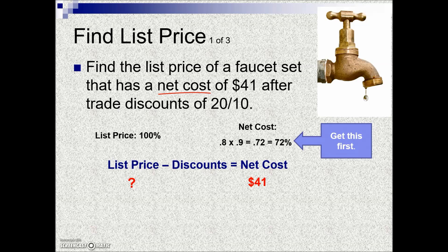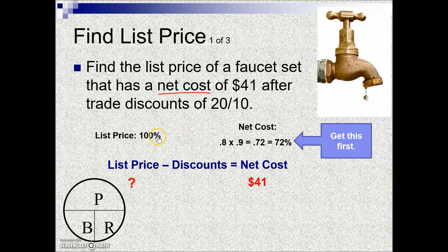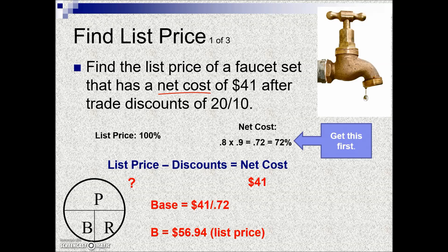The net cost is 72% of the list price. We now have a rate and a part, and we're looking for the base — it's the base because of its association with 100%. To find the base, we take the part divided by the rate: $41.00 divided by 72% gives us the list price of $56.94.